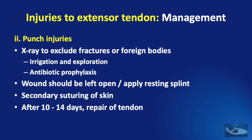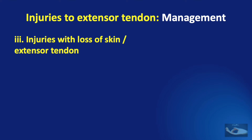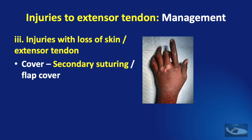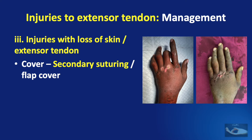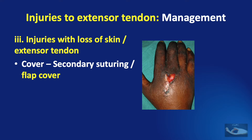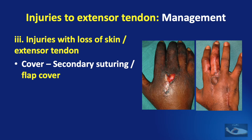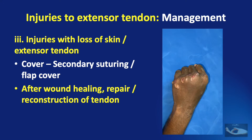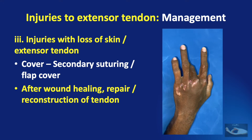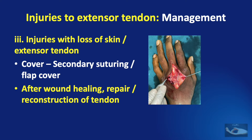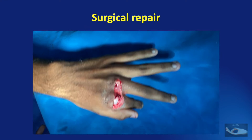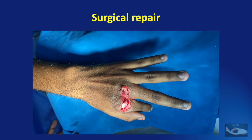If the wound has not healed by this time, it will need to go in for a secondary reconstruction later. When we encounter injuries with loss of skin or extensor tendon, the priority is to provide cover — either by secondary suturing if the wounds are very small, like friction burns which can be excised and closed primarily, or a flap cover, like in this patient where the skin cover is provided with a reverse dorsal metacarpal artery flap. After these wounds heal, a delayed primary repair or a secondary reconstruction of the tendon may be done, provided the joints are soft and supple.